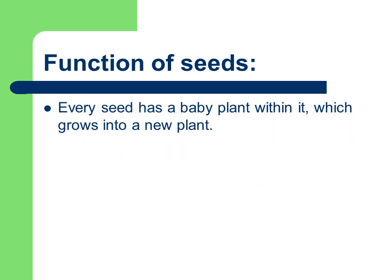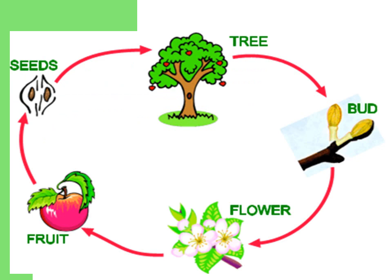What are the functions of a seed? Every seed has a baby plant within it, which grows into a new plant. Now I'll explain the relationship between flower, fruit and seeds. From a bud, a flower blooms. From the flower, a fruit is born. From the fruit, seeds are taken out. From these seeds, again a new plant is formed. From the plant, a new bud is formed, then a flower, then a fruit, then seeds — the cycle keeps on repeating: from flower, to fruit, to seeds.